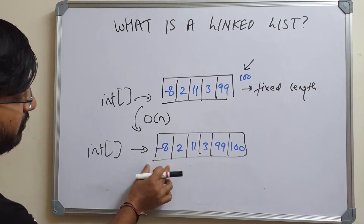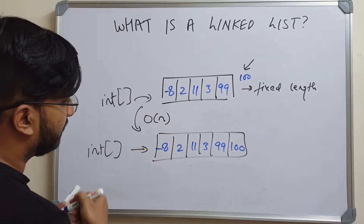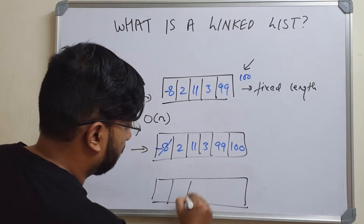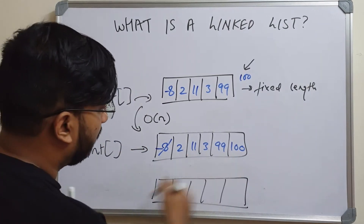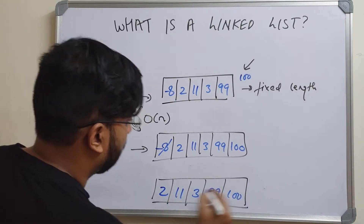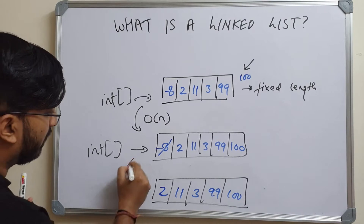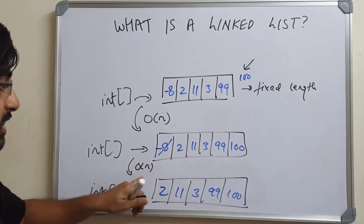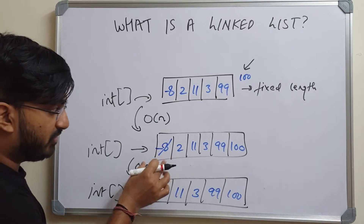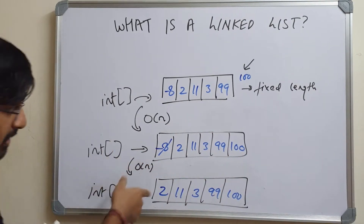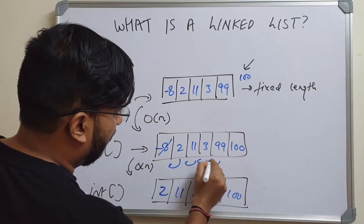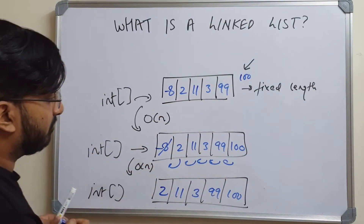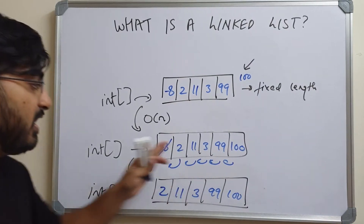What if you want to remove the first value from this array — get rid of minus 8? You would create an array of five locations and copy all the remaining values into the new array. This operation is again O(n) because you are running through the entire length of the array. Even if you don't create a new array, you still have to shift all the values to the left, and in that case the complexity is also O(n).